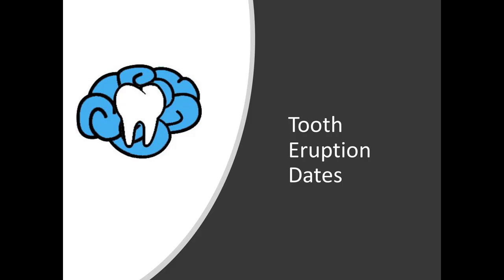Hey everyone, Ryan here. In this video we're going to talk about dates of tooth eruption, a critically important topic for all dental board exams but also for general dental knowledge. Teeth come in all different shapes and sizes, and their exact location in the jaws and when they come into the mouth depend on numerous factors. People are typically born with all 20 baby teeth or primary teeth, but they don't start to erupt until about six months of age. They exfoliate at various times as a child and are eventually replaced with adult or permanent teeth.